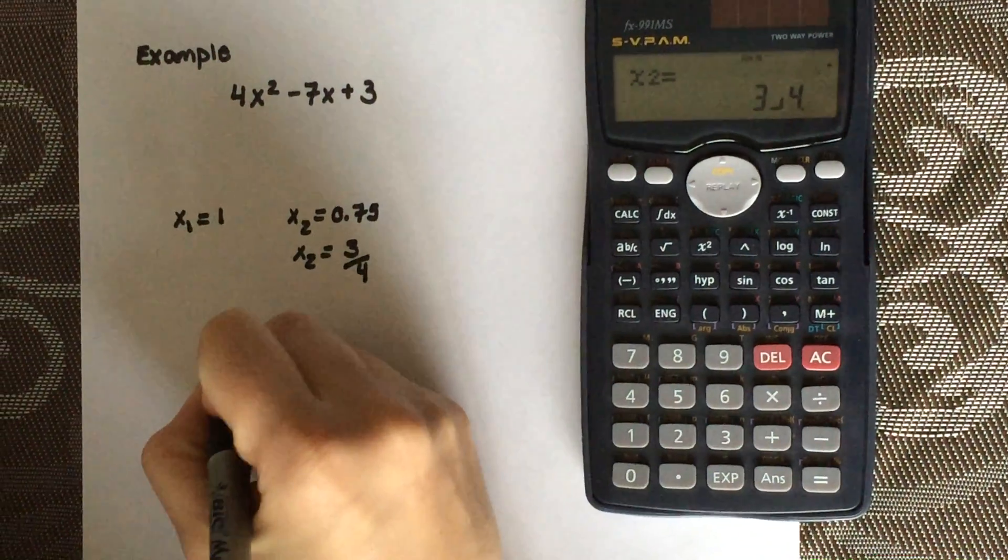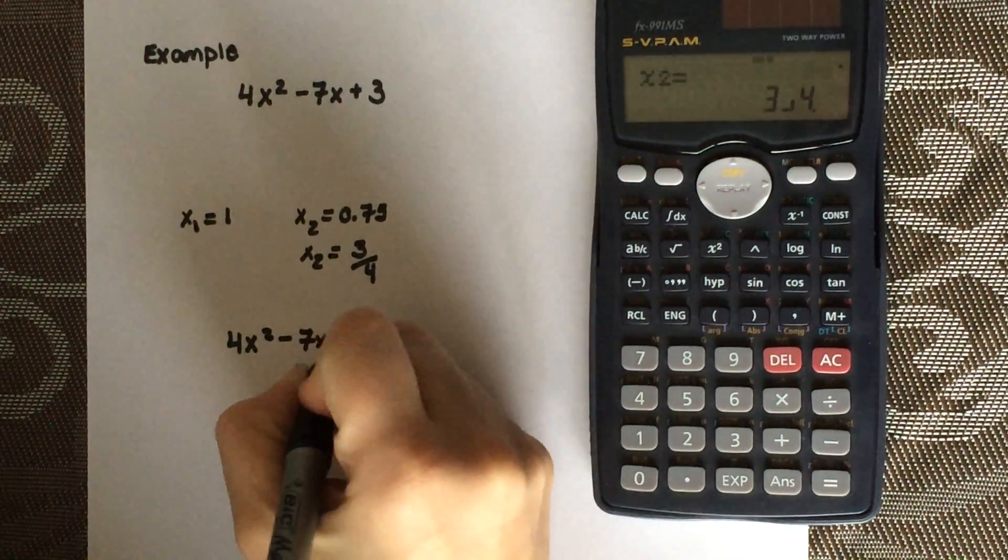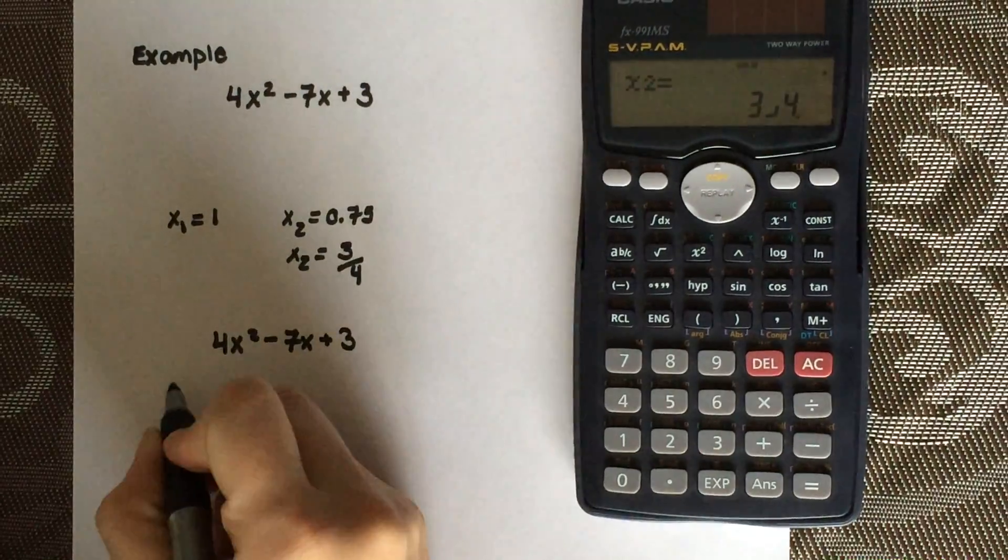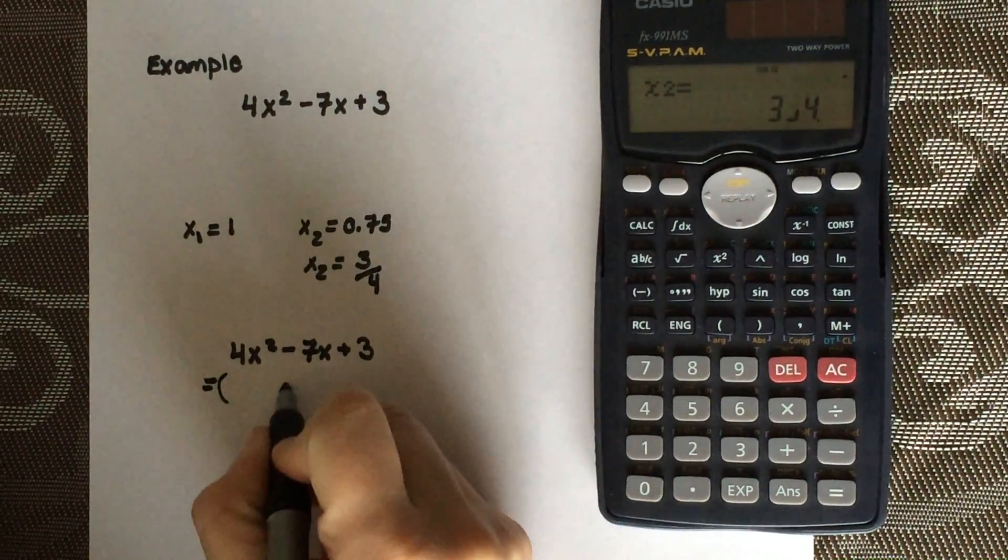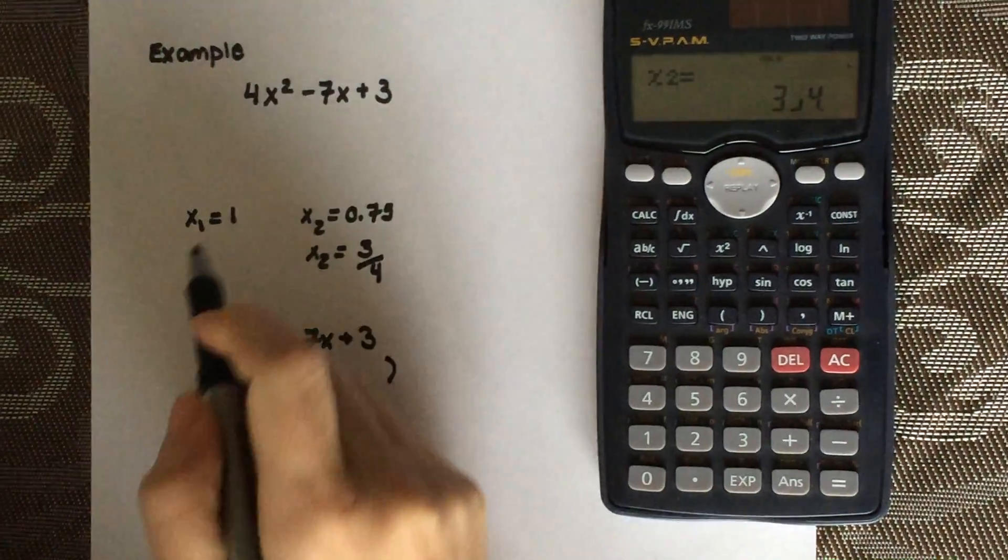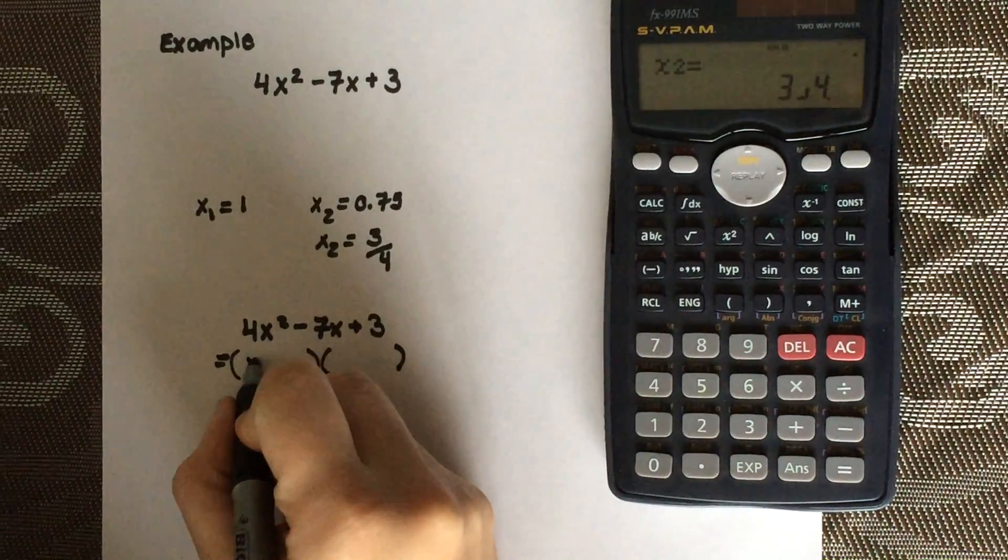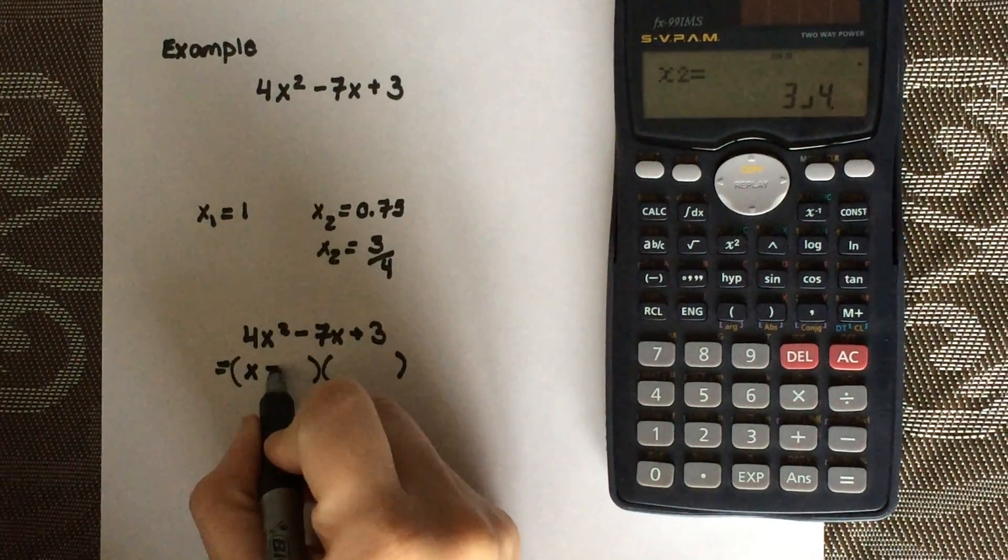Now that you have these, we can factor this easily. Since it's quadratic, we're going to end up with two binomials. First one, you see the value is 1, so we're just going to write X opposite sign, so minus 1.